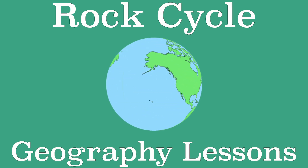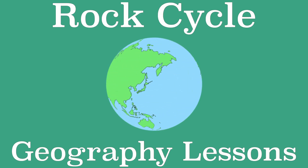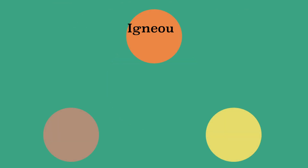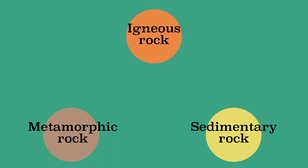You have already learned something about the different types of rock in the various earlier videos. We can divide rocks into three types: igneous rock, sedimentary rock, and metamorphic rock. This video explains the origin of all these types of rock.